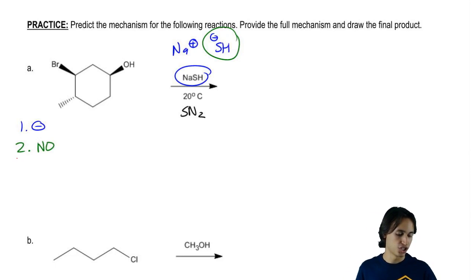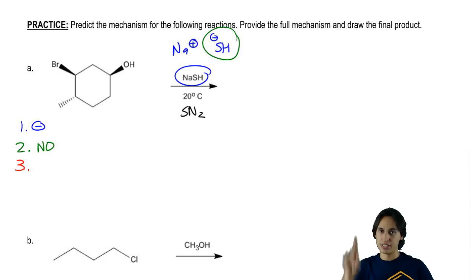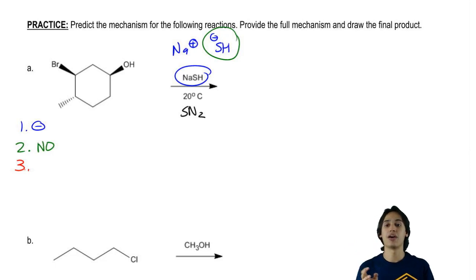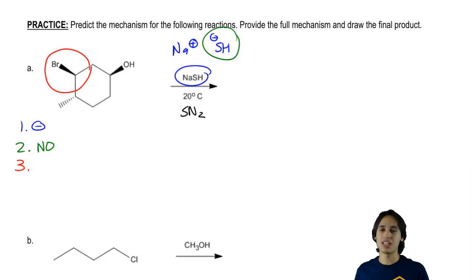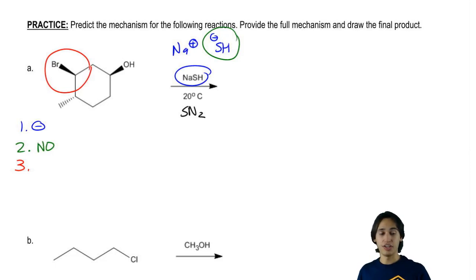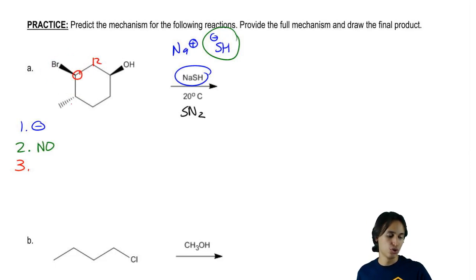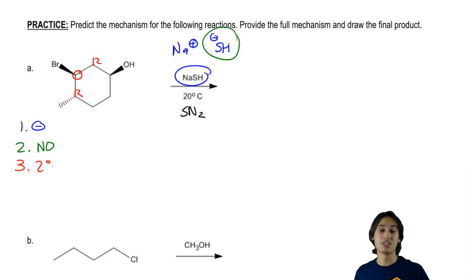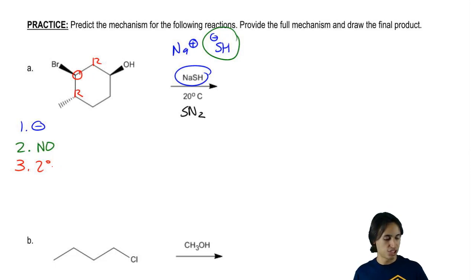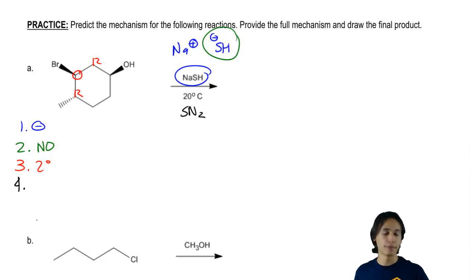So let's go to the third question. Going down: what type of leaving group do I have? My leaving group is this bromine here. What type of leaving group is that? That would be secondary, because the carbon it's attached to has two R groups coming off of it. So that would be secondary. What does that mean? That means we have to ask ourselves one last question, because secondary doesn't tell you a mechanism right away.